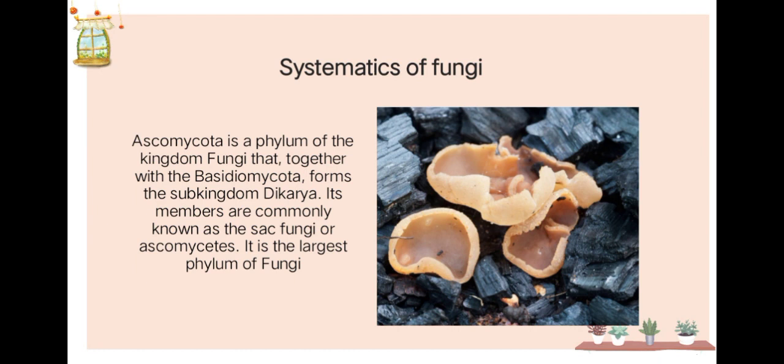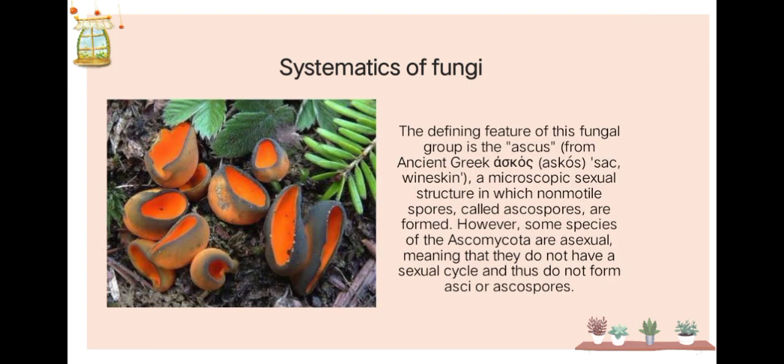Next is Ascomycota, a phylum of the kingdom fungi that, together with Basidiomycota, forms the sub-kingdom Dikarya. Its members are commonly known as sac fungi or ascomycetes. It is a large phylum of fungi. The defining feature of this fungal group is the ascus, a microscopic sexual structure in which non-motile spores called ascospores are formed. However, some species of Ascomycota are asexual, meaning they do not have a sexual cycle and therefore do not form asci or ascospores.